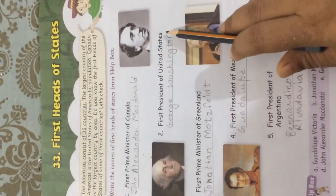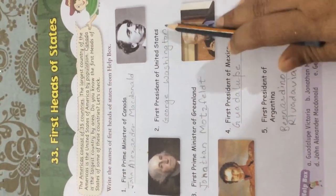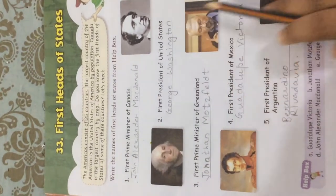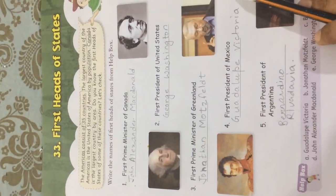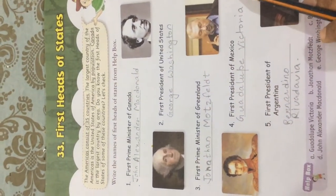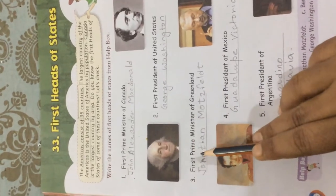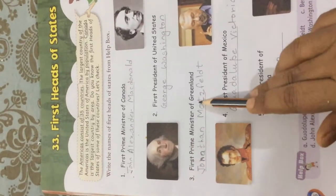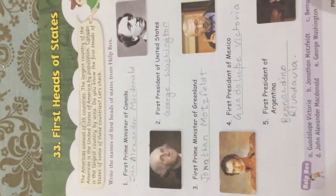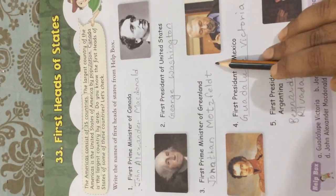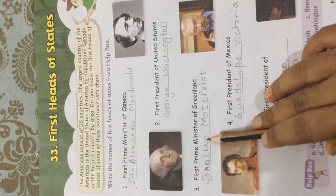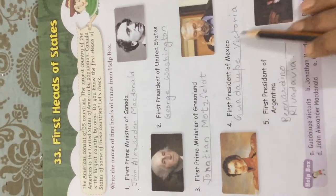Second: the first president of the United States was George Washington. Third: the first prime minister of Greenland was Jonathan Mossfeld.